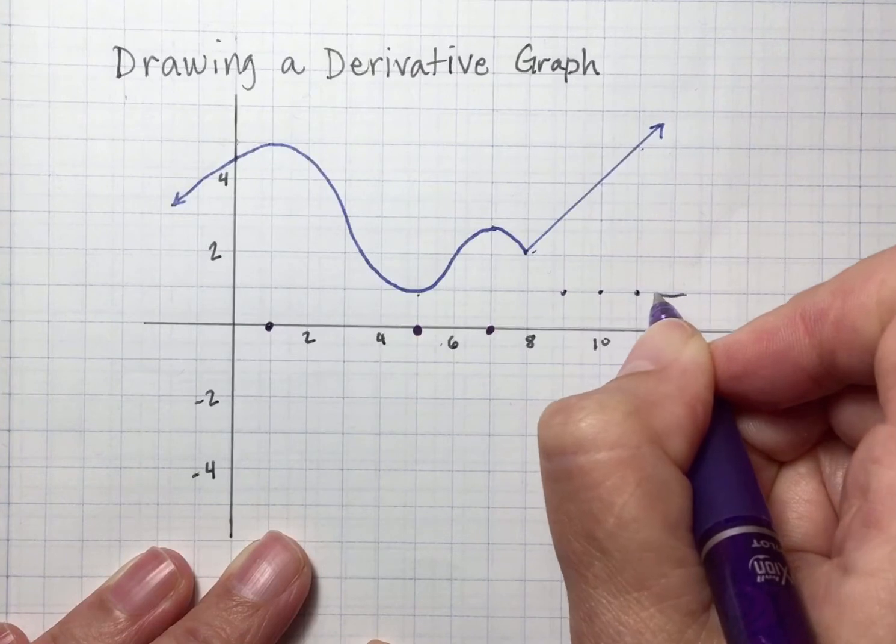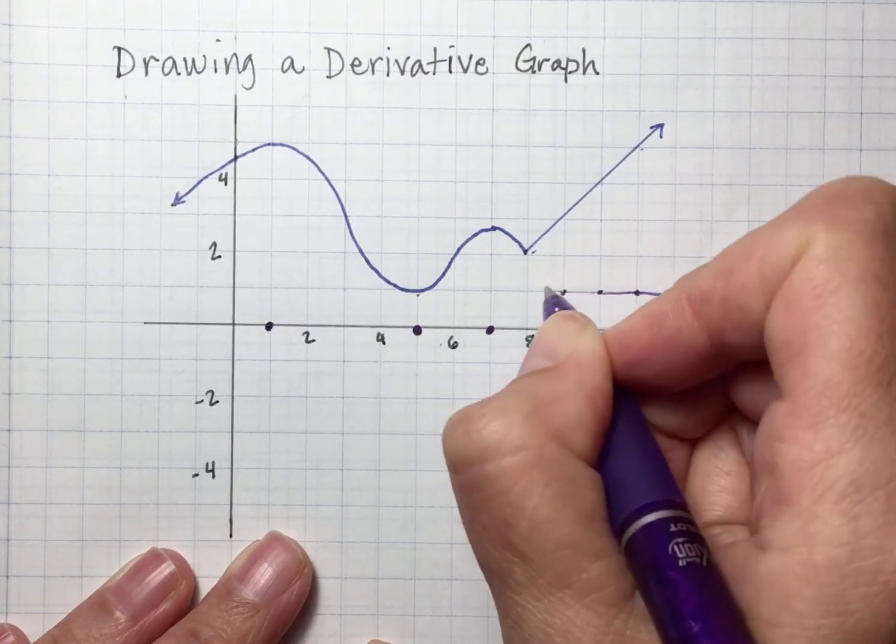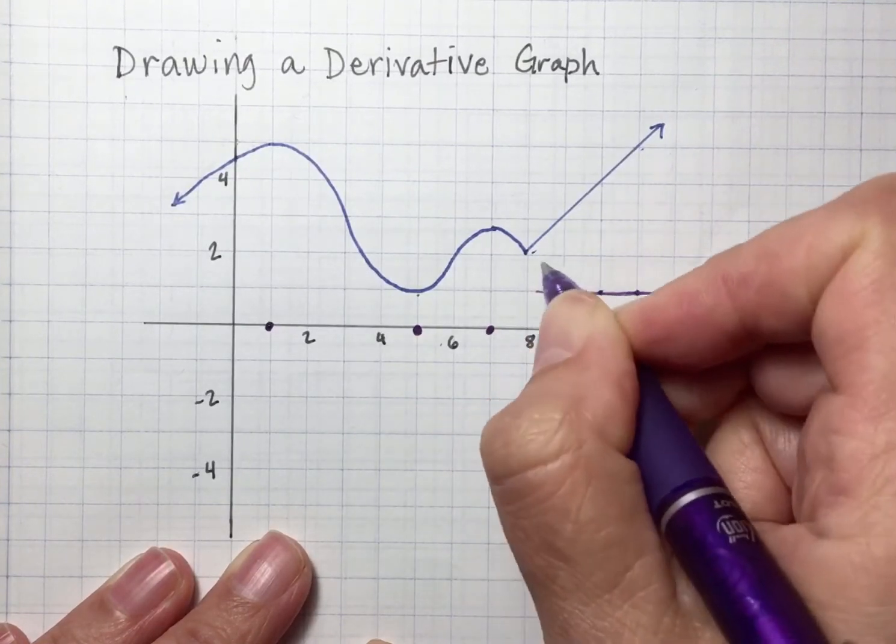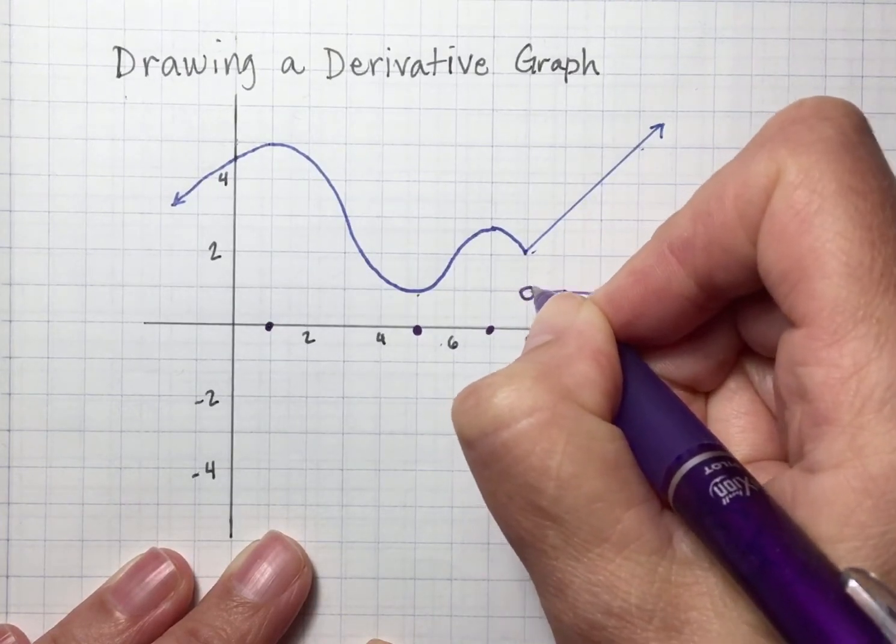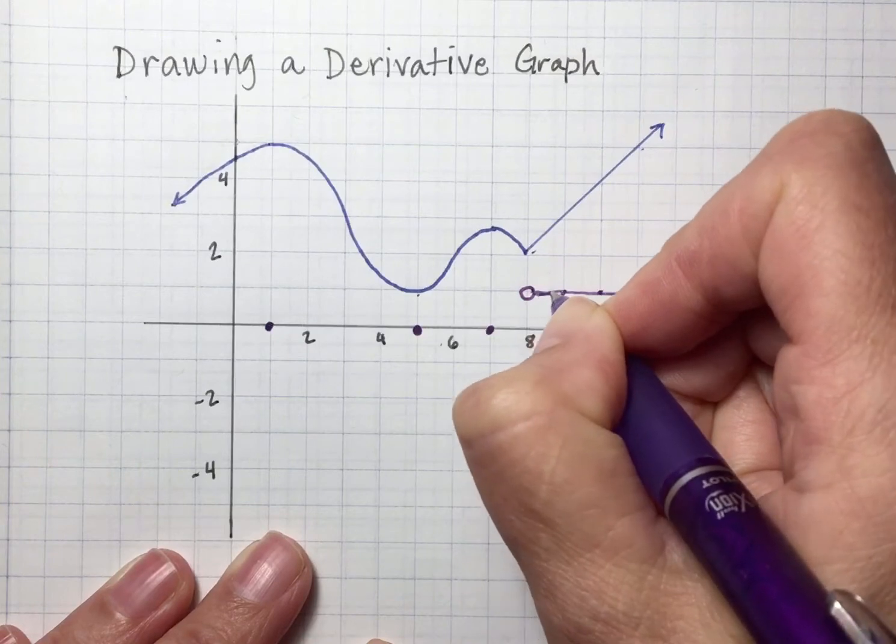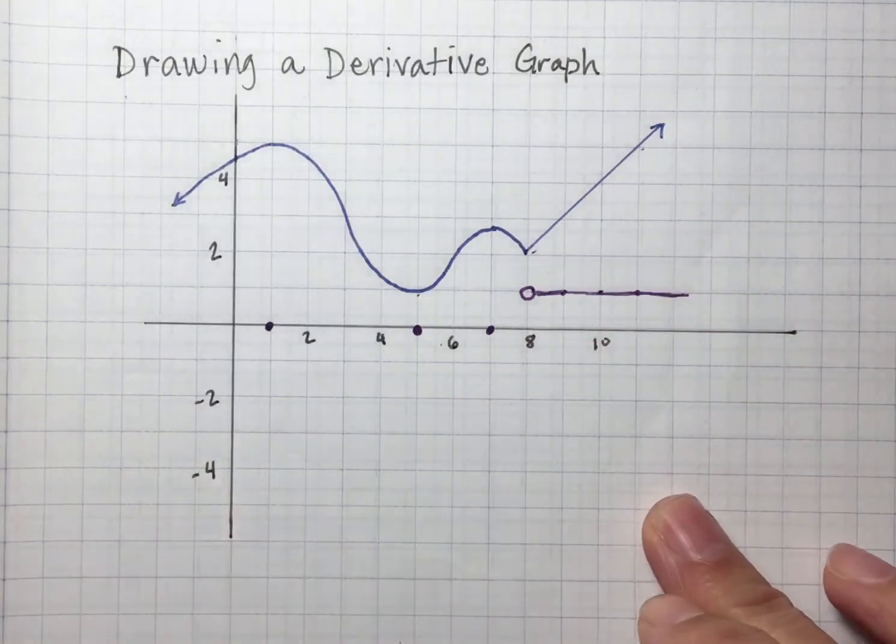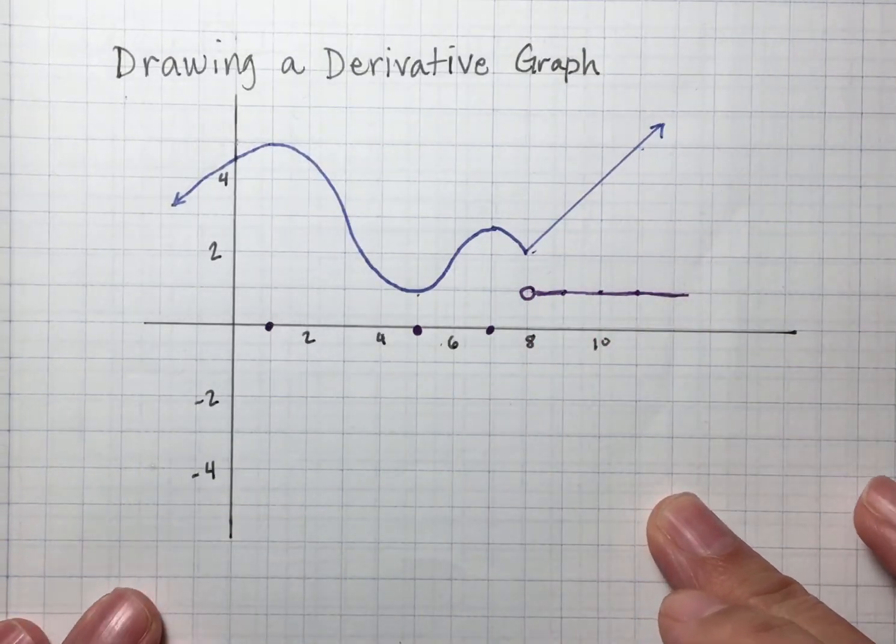But what about as I head back towards x equals 8? Well, at x equals 8, we actually have an open circle on our derivative because you can't draw a tangent line on a corner or cusp. The derivative of this function will not be continuous.